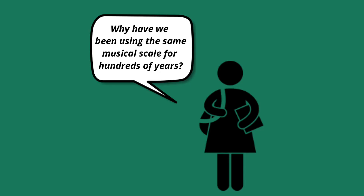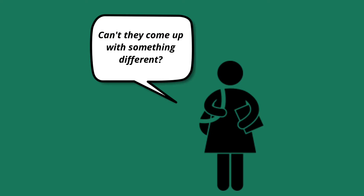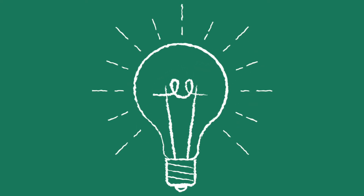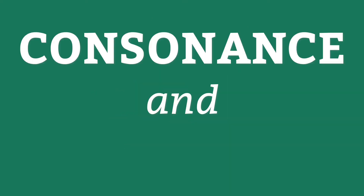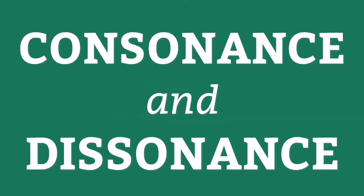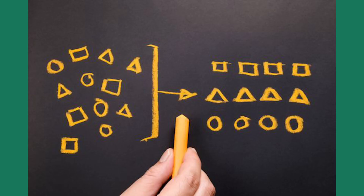The other day a student asked me, "Why have we been using the same musical scale for hundreds of years? Can't they come up with something different?" And while it's not entirely accurate, I thought it was a great question. To begin to answer that, we first have to look at what's called consonance and dissonance. This is how we classify certain sounds — it's how we decide what sounds good and what doesn't.